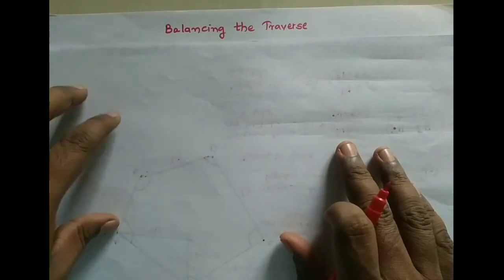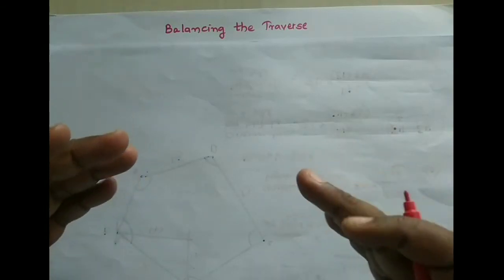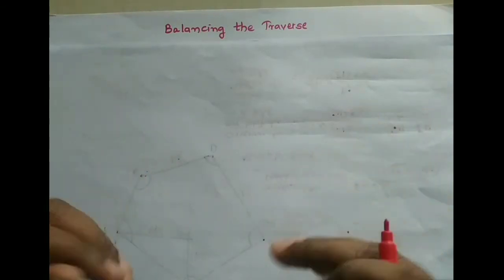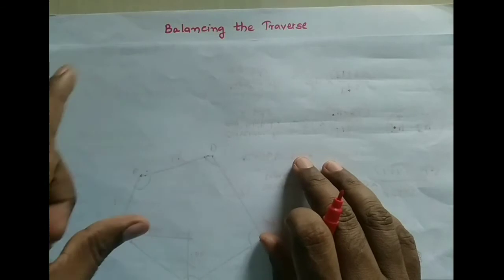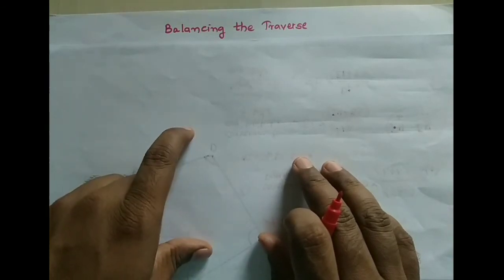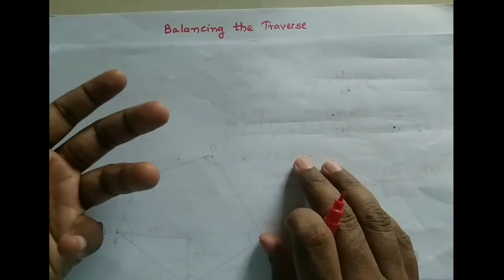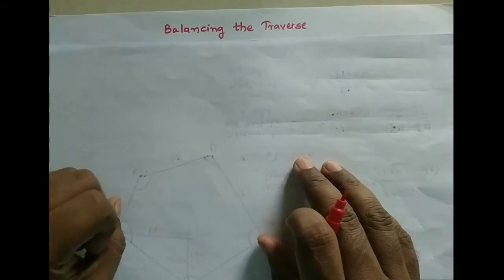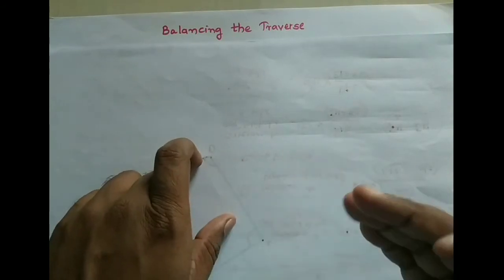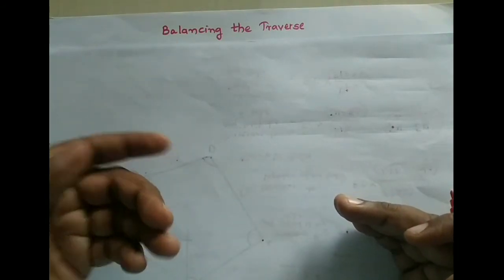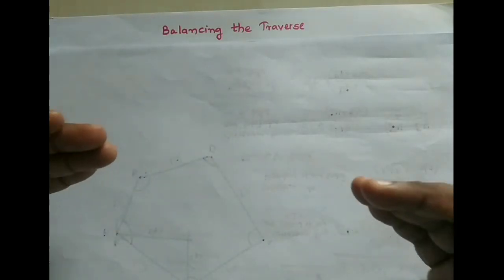Balancing the traverse is a very important topic because whatever errors come in latitudes or departures need to be corrected. The independent coordinates we find out depend on latitude and departure. The use of independent coordinates is to find out the area of the closed traverse. So this process of correcting dimensions and coordinates is very important. Let's see how to do balancing the traverse.